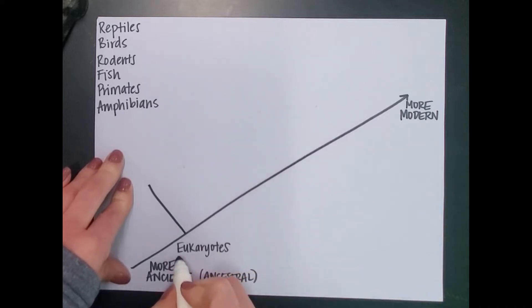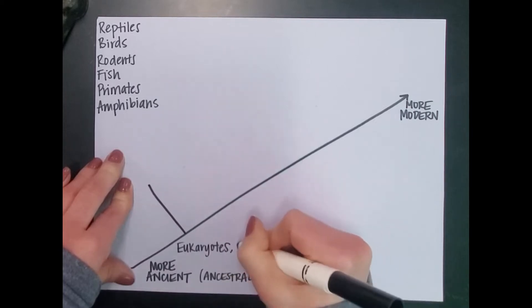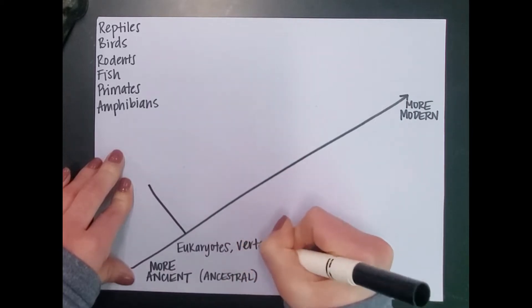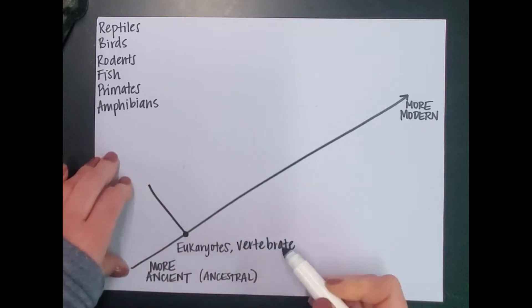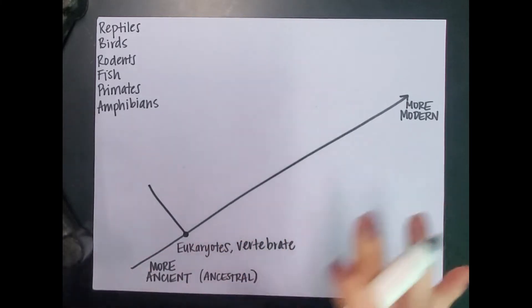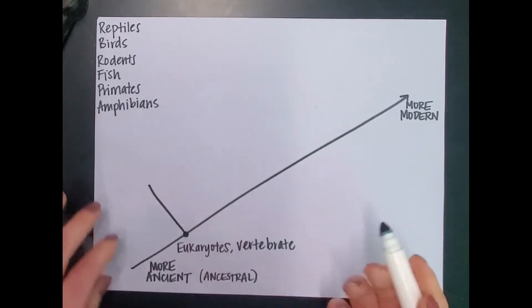Now you've noticed I've put at the bottom here eukaryotes. They are all eukaryotes. In addition to that, they are all vertebrates. So I'm going to put that before this node here. Because they're all eukaryotes and they're all vertebrates, nothing is going to be separating them from each other.